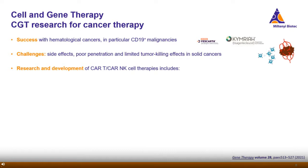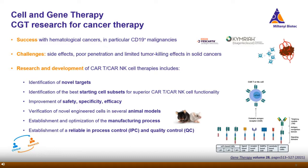To address such limitations and advance the field, a lot of research is going on at present. The development and optimization of these living drugs includes the identification of novel targets, identification of the best starting cell subsets, improvement of safety, specificity and efficacy, and the verification of novel targets on animal models. Moreover, it's important to optimize the manufacturing process and establish reliable in-process control and quality control right from the start. Developing and optimizing CAR-T cell immunotherapy goes back and forth from benchtop research to early clinical development, so it is important to follow a workflow that enables you to switch between a research and a clinical setting.